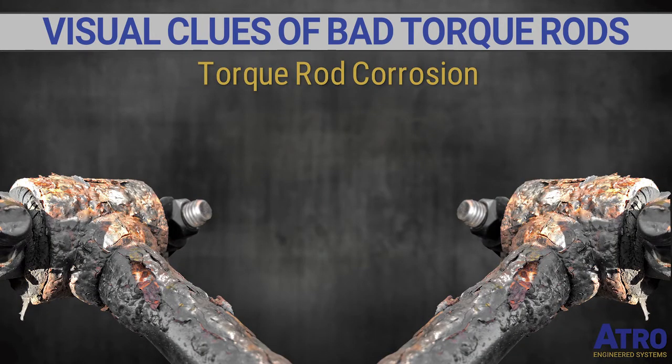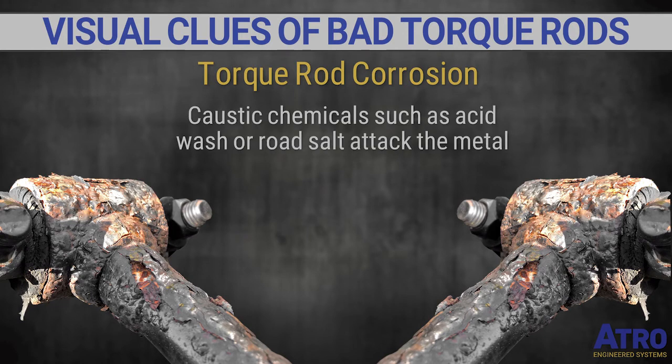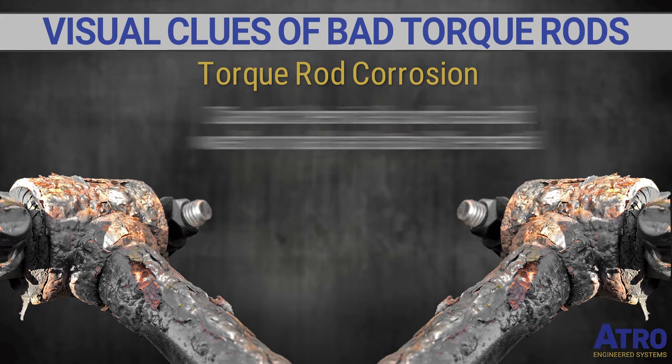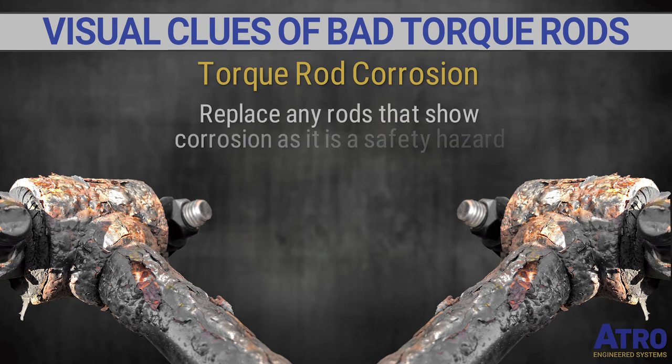Torque rod corrosion can be the result of failed paint or powder coating, as well as exposure to caustic chemicals which attack the metal. If you see corrosion, it's definitely a safety hazard and the rod should be replaced.